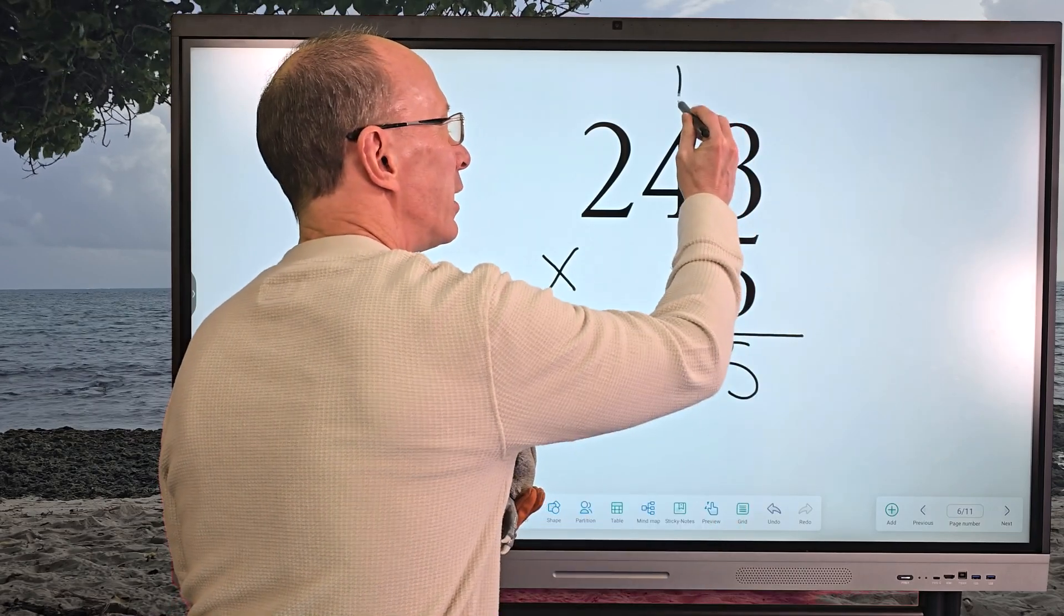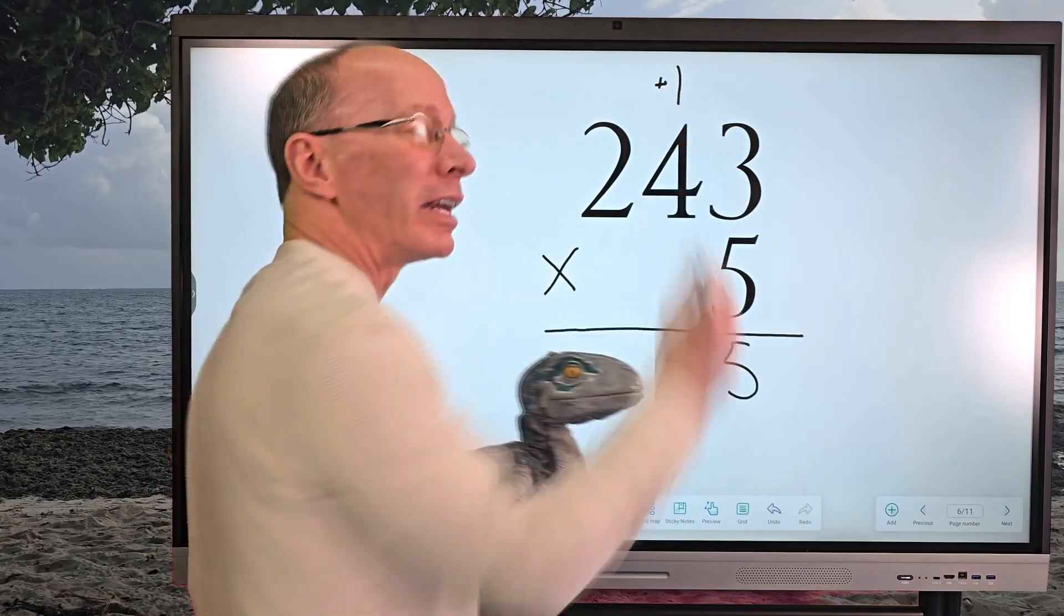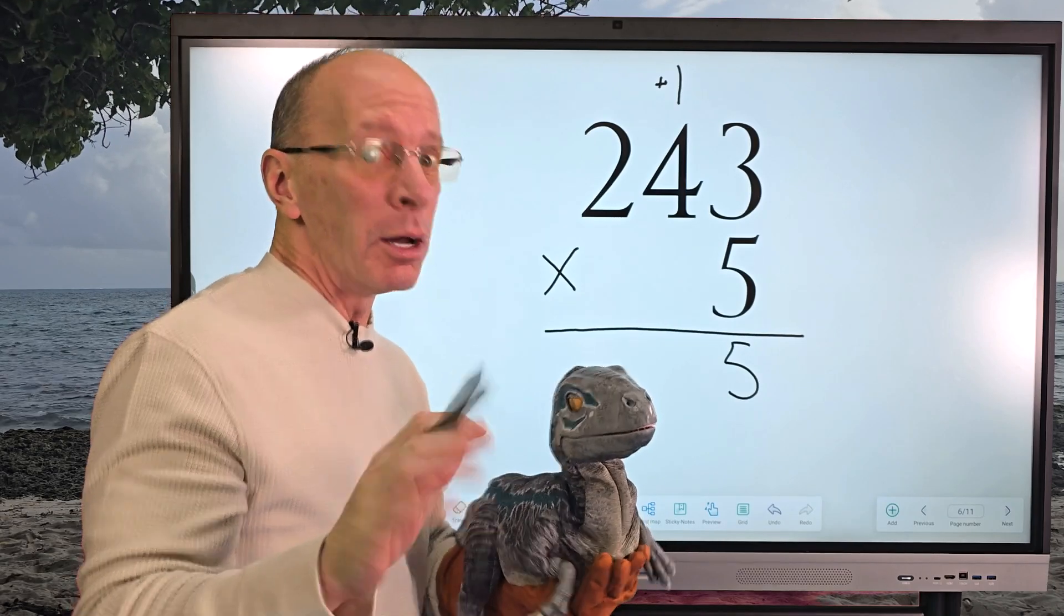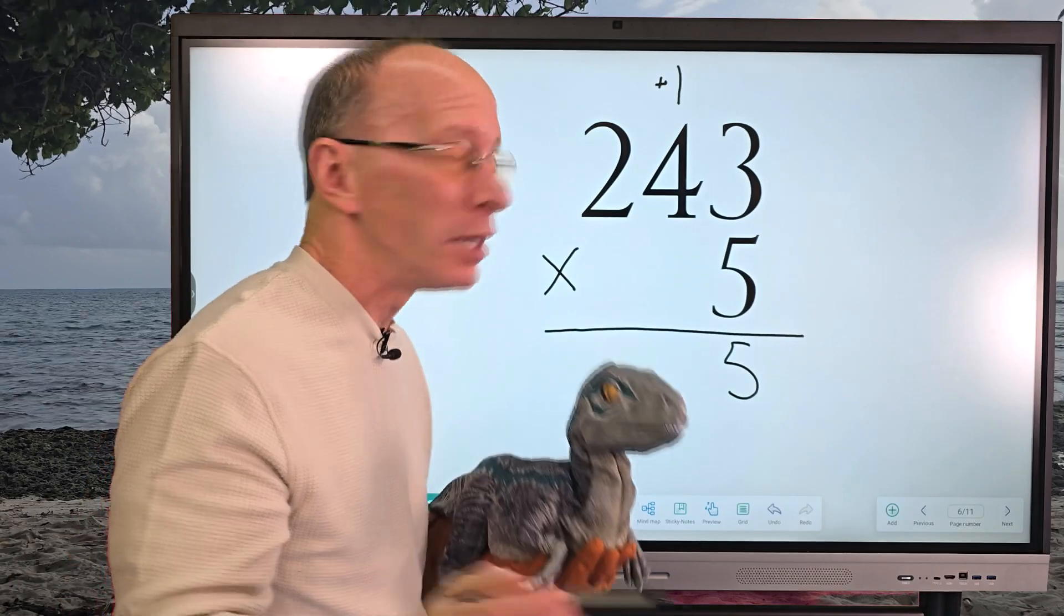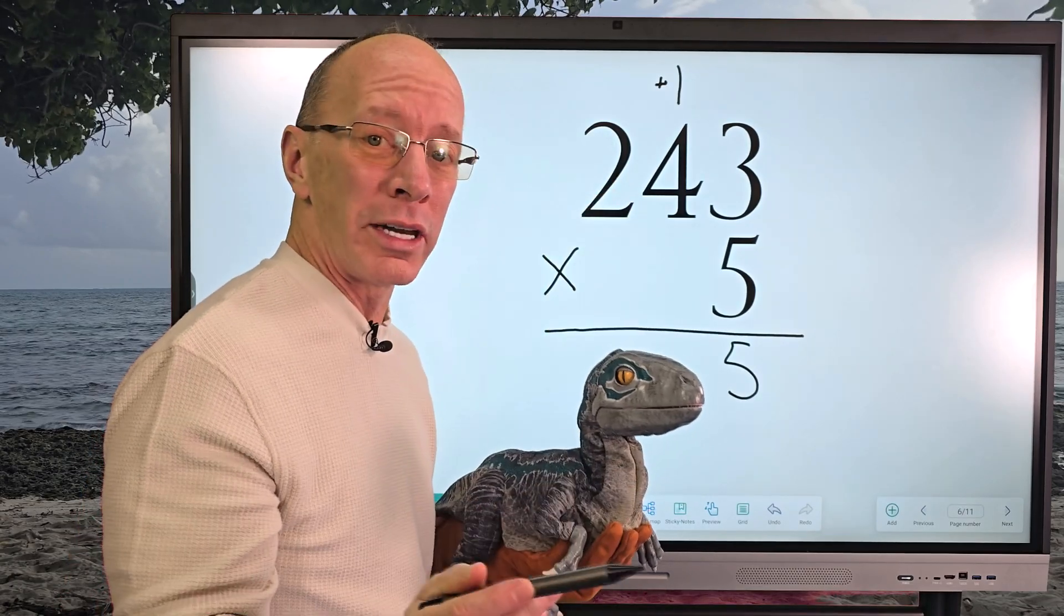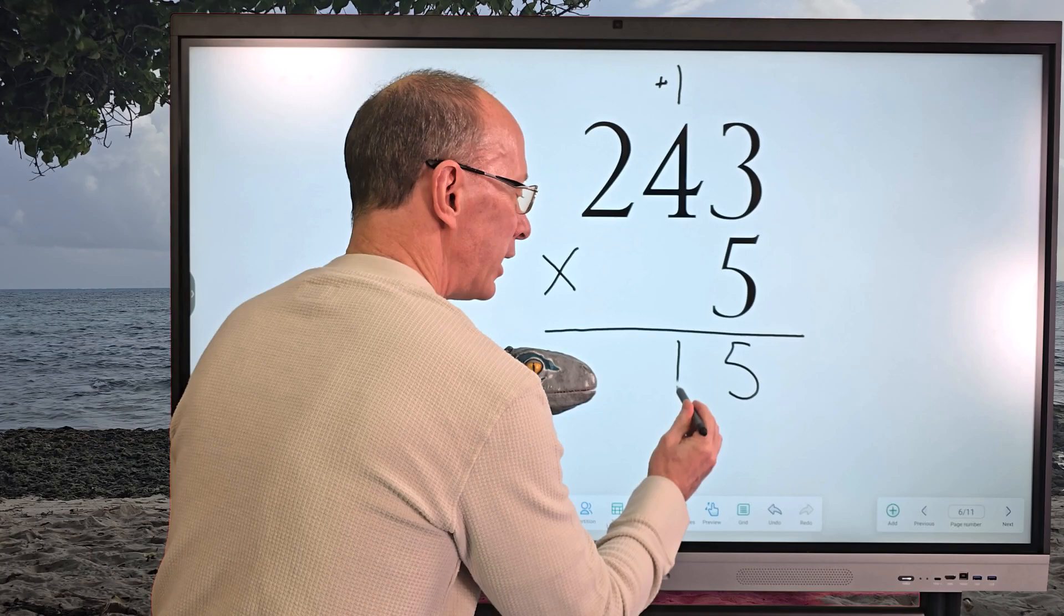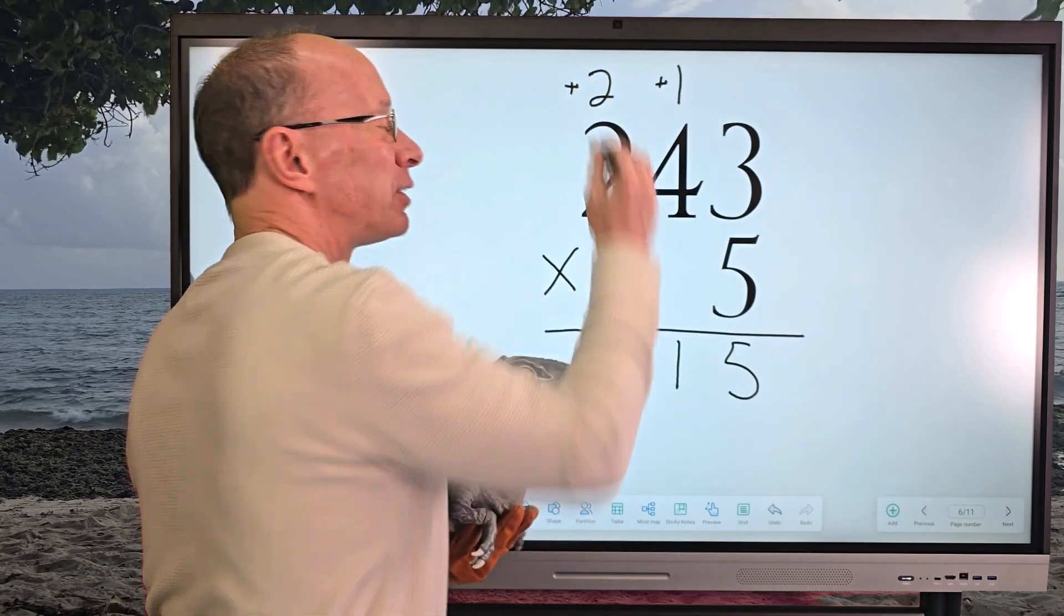So now I'm going to take five times four, which equals twenty. Plus that one is twenty-one. So I put the one right here, I'm going to put the two up here, and I'm going to add that two in a little bit—not yet, but in a little bit.